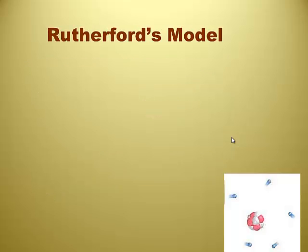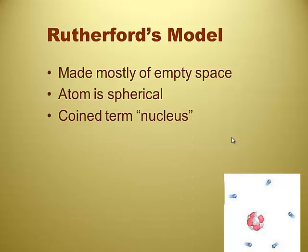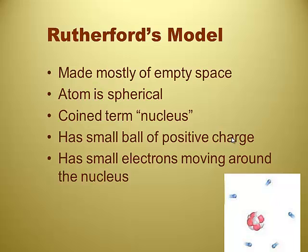So, as a quick review here, the last time we saw the atom, so Rutherford's model looks like that picture on the corner there. It's not quite drawn to scale, but the model of the atom currently is made up of mostly empty space. The atom is spherical in shape, generally. Rutherford had coined the term nucleus, which he designated as the small positive center. This is the guy who had the grad students do all the work, right? Gold foil experiment? Correct. So, he's got the small ball of positive charge that is the nucleus. We've got protons and neutrons in the nucleus, and we've got these electrons that are moving around the nucleus.